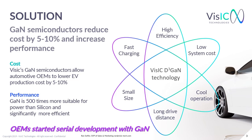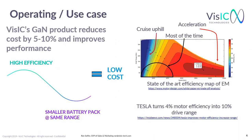OEMs already understood this and started with serial development of GaN-based systems. One of the important systems of the powertrain is the E-drive with the inverter and E-motors. When analyzing the E-drive system, it's important to look at the car driving cycle. Looking at the efficiency map, it is clear that there are many areas where the car operates at low efficiency over the driving cycle. These areas are generally at low torque and low RPM, which is where the e-car operates most of the time, as highlighted in black on the E-motor efficiency map. We should try to optimize those areas to improve system performance.